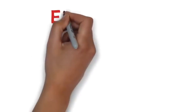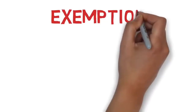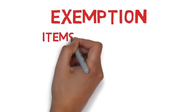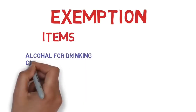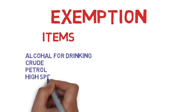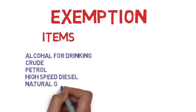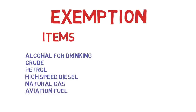There are some items which are exempted from GST. These include alcohol for human consumption, petroleum products like crude, petrol, high speed diesel, natural gases and aviation turbine fuel.